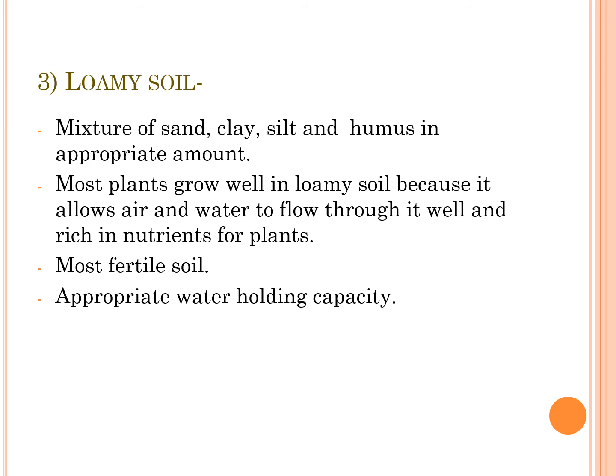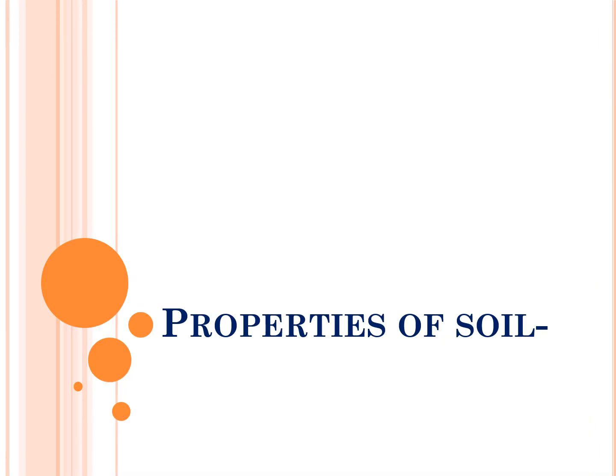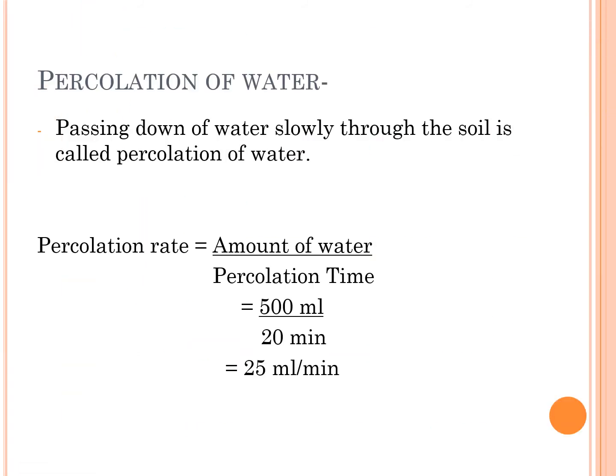Next we study the properties of soil. The first is percolation of water. When we pour water into a pot with a plant, some water is absorbed by the soil and a certain amount passes down slowly through the soil — this process is called percolation of water. We can calculate the percolation rate by the formula: percolation rate = amount of water divided by percolation time.